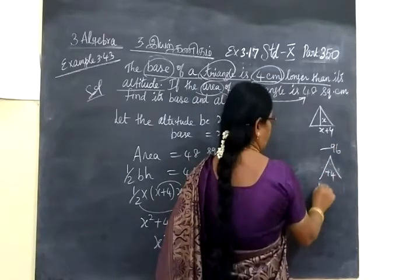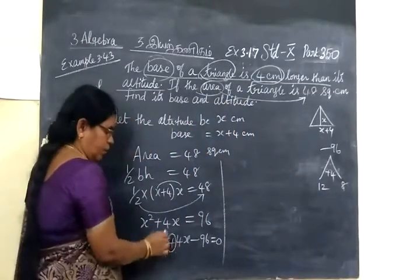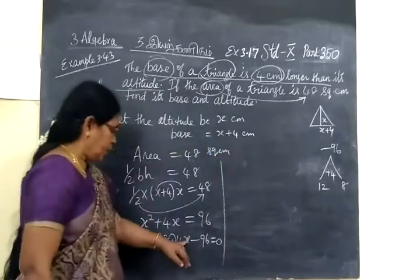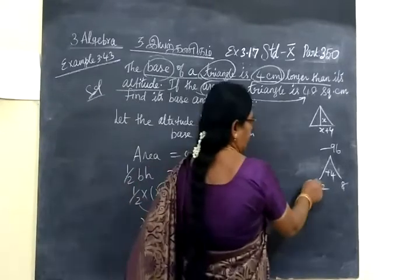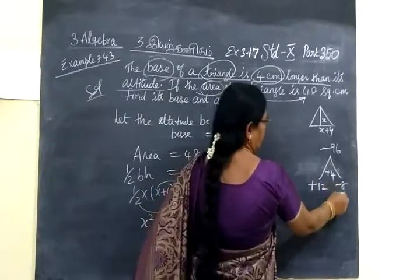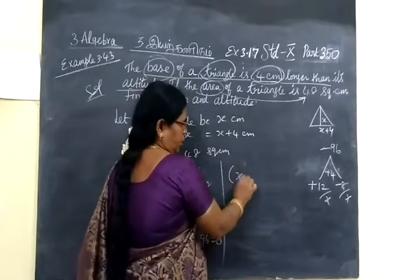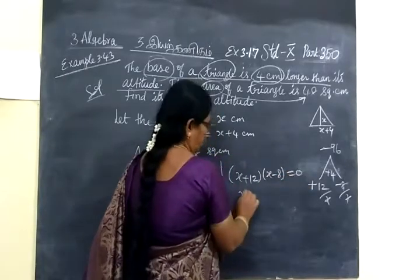Plus 4. You can take 12 and 8. Always use the middle term sign for greater number. Middle term sign will go that you are using for greater number. So plus into minus, minus. So now we are writing x plus 12, x minus 8 equal to 0.